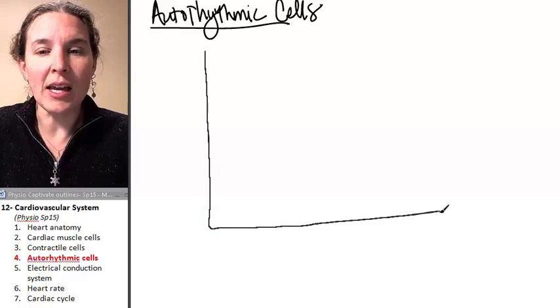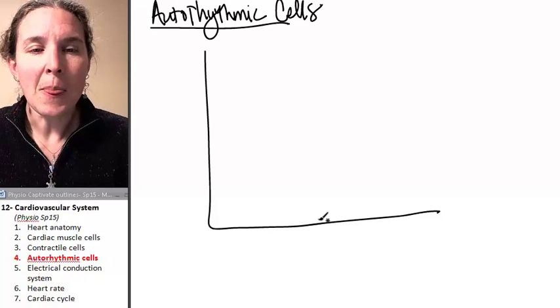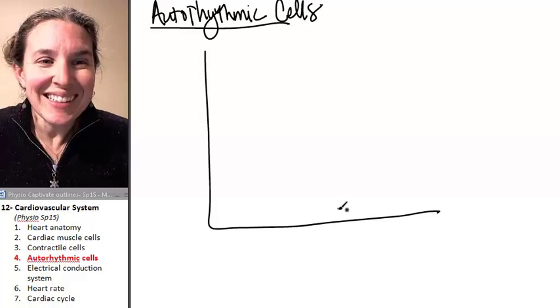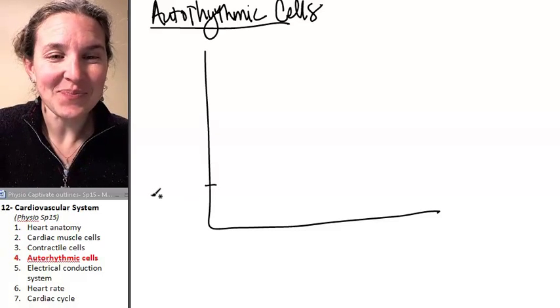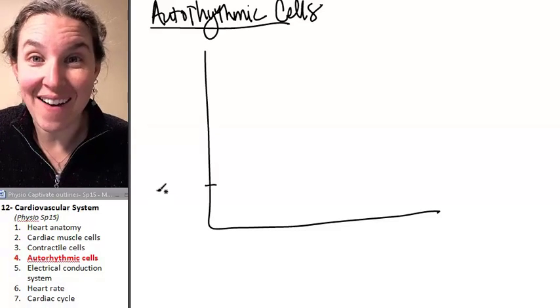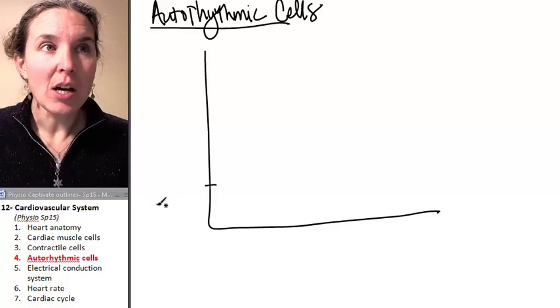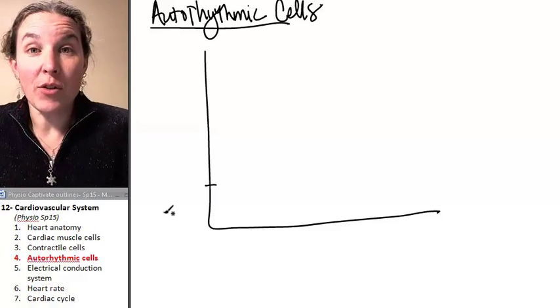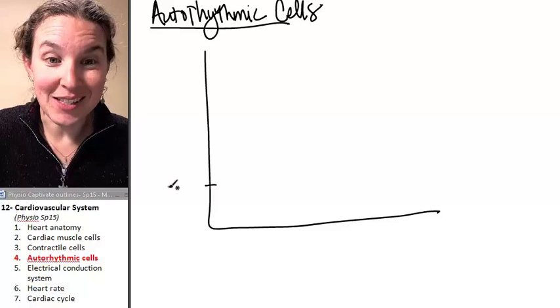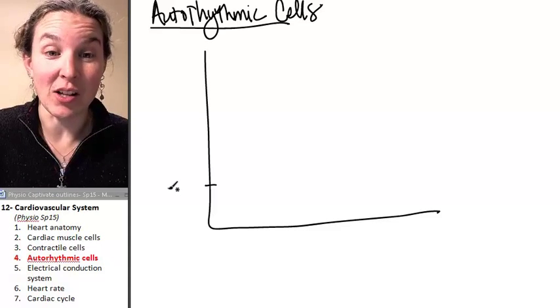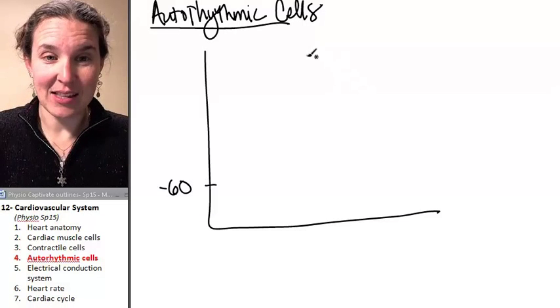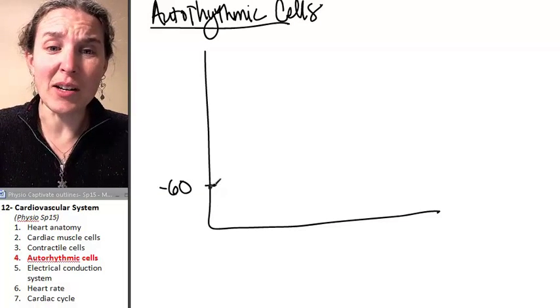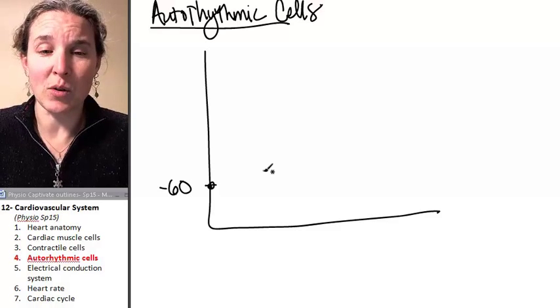That would be your friendly autorhythmic cells. So autorhythmic cells are so cool. Here's the deal. They do not have a resting potential. Contractile cells did not have threshold. Autorhythmic cells have no resting potential. However, they begin the cycle at about negative 60 millivolts.